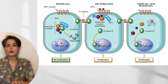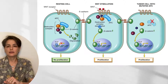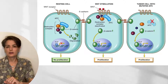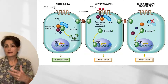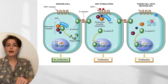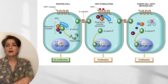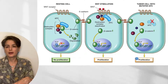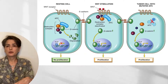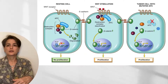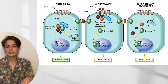When Wnt stimulation occurs, the destruction complex is deactivated, beta-catenin concentration increases, and it translocates into the nucleus driving proliferation. In intestinal type adenocarcinoma, if APC is knocked out through allelic loss or epigenetic silencing, the degradation complex is deactivated and beta-catenin freely enters the nucleus. Alternatively, if beta-catenin becomes resistant to degradation, its concentration increases and drives proliferation.